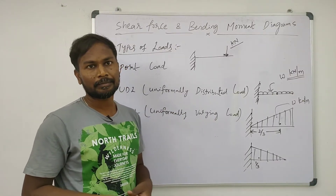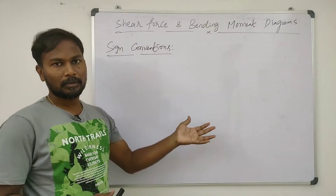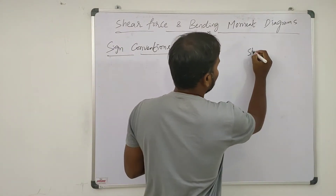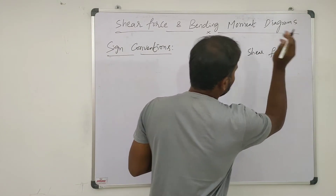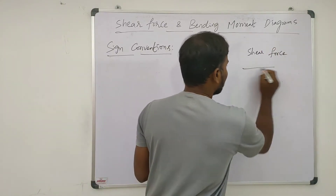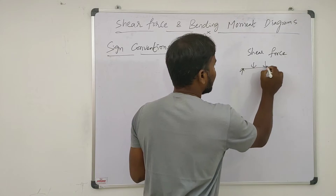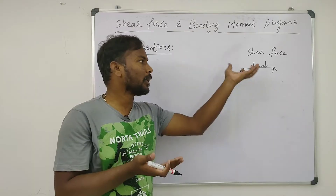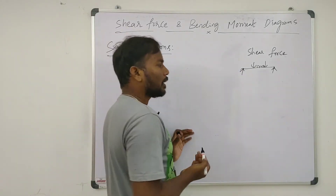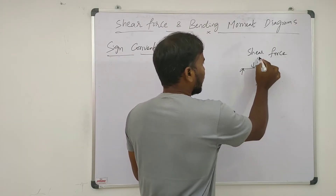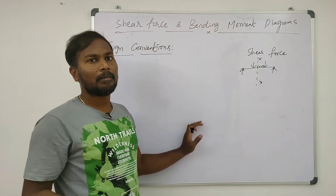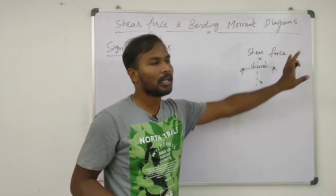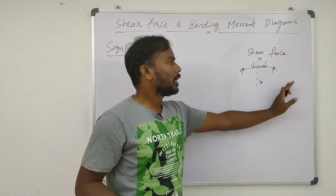Now we will go with the sign conventions — what is the shear force and what is the bending moment. The algebraic sum of forces either to the left of the section or to the right of the section is called the shear force.